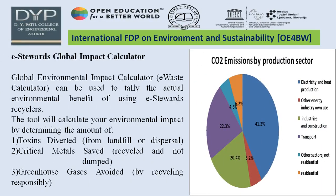The E-Statewards Global Impact Calculator can be used to tally the actual environmental benefits of using E-Statewards Recycle. The tool calculates your environmental impact by determining: number one, toxins diverted; number two, critical metals saved; number three, greenhouse gases avoided. The diagram shows carbon dioxide emissions by production sector worldwide — electricity and heat, other energy industry own use, industry and construction, transport, other sectors including residential — all given in the graphs.